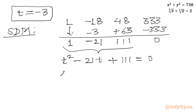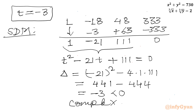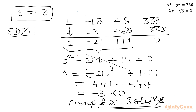Now I will check only the discriminant. Delta equals b² minus 4ac, so (minus 21)² minus 4 times 1 times 111, which is 441 minus 444, giving negative 3. Since the discriminant is negative, this quadratic generates only complex solutions, which we reject as we are looking for real solutions. So the only accepted value is t equal to minus 3.